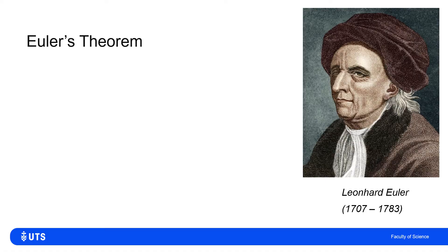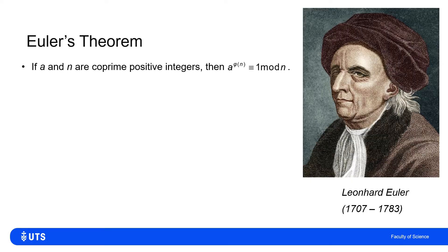Keeping Euler's condescending face on screen, we'll say that if a and n are co-prime positive integers, then a to the phi of n is equivalent to 1 mod n. That is Euler's theorem. In fact, if I raise the integer a to the power of phi n and divide by n, I will always get remainder 1.